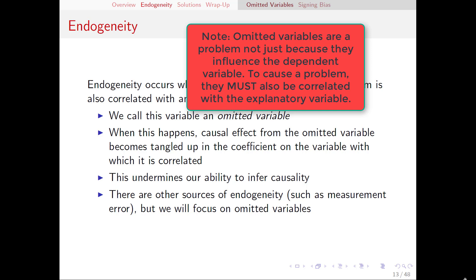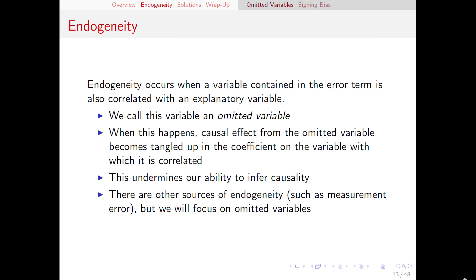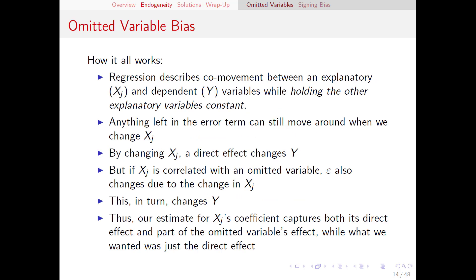Whenever we have an omitted variable, when we run the regression we are not actually properly estimating our coefficient, our beta. Instead, we're getting some tangled up combination of the actual beta, but also the effects of the omitted variable. What we were trying to estimate is a causal relationship between our explanatory variable and the dependent variable, which we can't do anymore since it's mixed up with all this other stuff. I'll mention now that endogeneity — a correlation between explanatory variables and the error term — can result from other sources as well, one being measurement error. But we are going to be focusing on omitted variables.